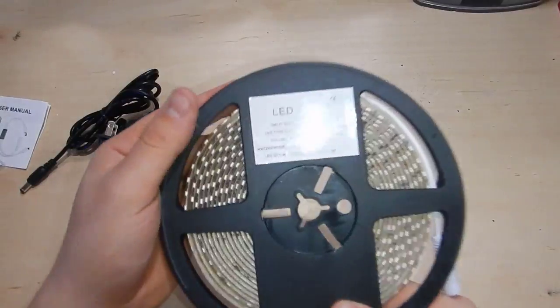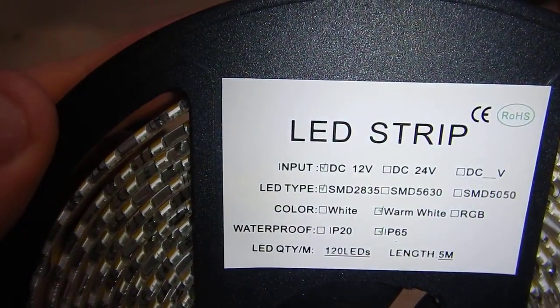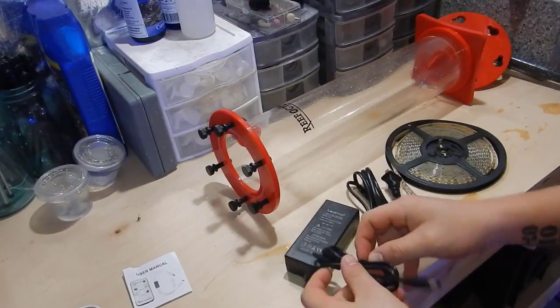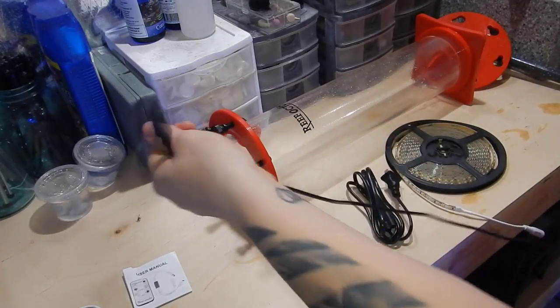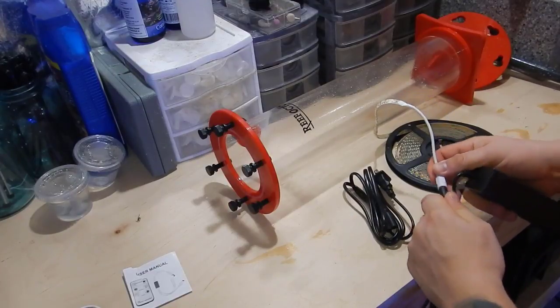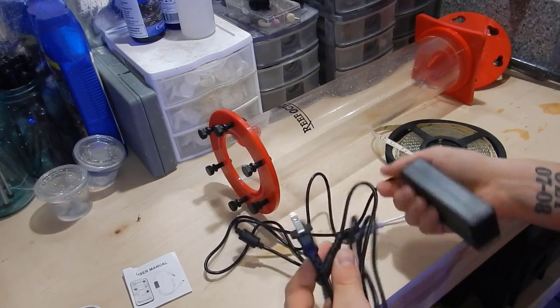I decided to go with 3000K because that seems to be the most popular thing I'm seeing on the forums. I'm basically just imitating what everybody else has done that's been successful. I was also thinking about maybe doing a red and blue LED strip and putting it with these lights down the road. Maybe I'll test that later to see if the combination will increase growth.